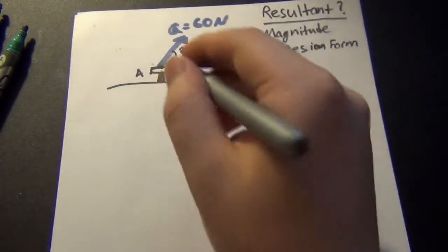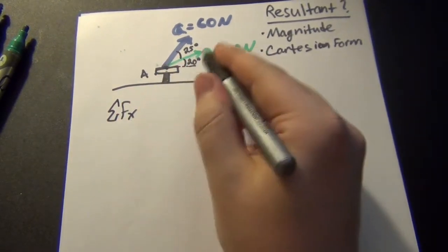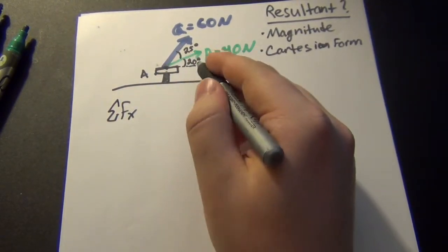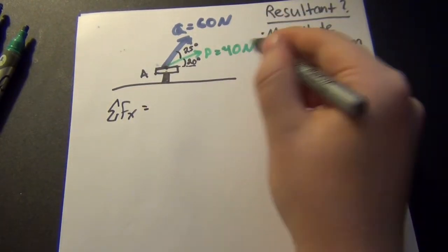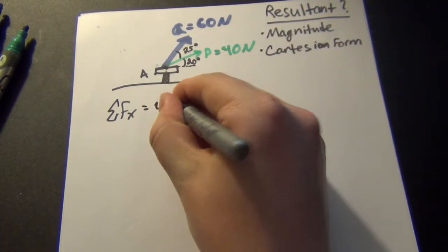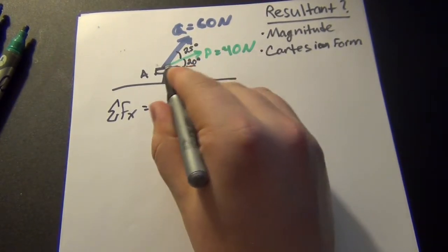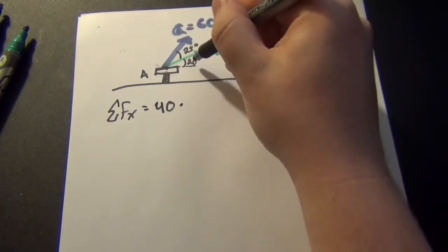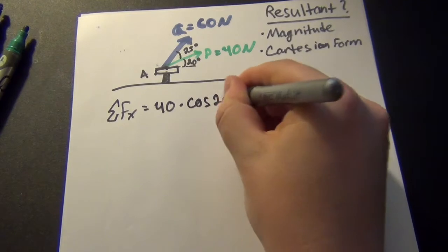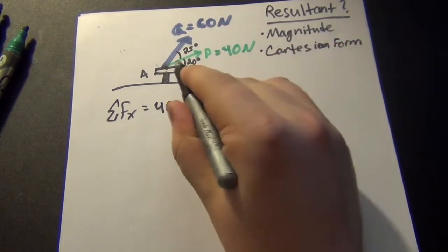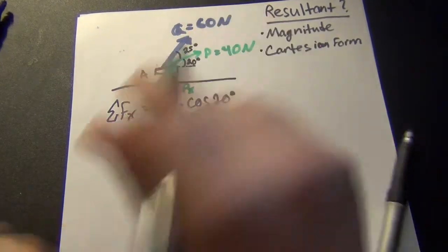So we just do that by taking the sum of all the X components of these two vectors. And so we see that we have P is 40, so we have 40 Newtons times, we want the X component, so that's the cosine of this angle. It's cosine this way, and the sine is the perpendicular. So we take the cosine of 20 degrees, and so that's the X component of P.